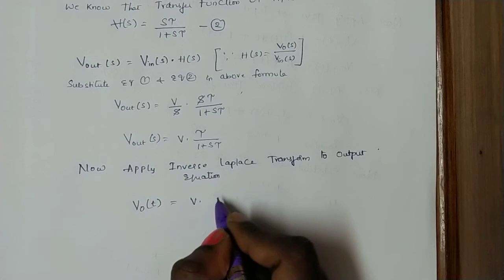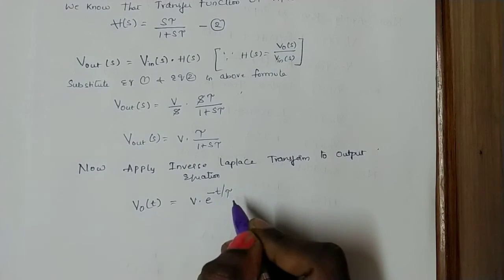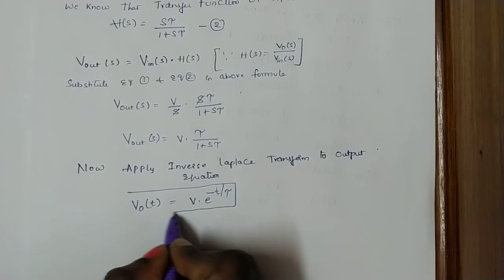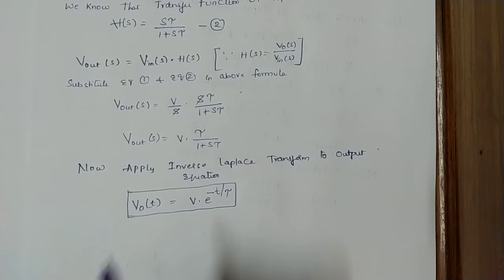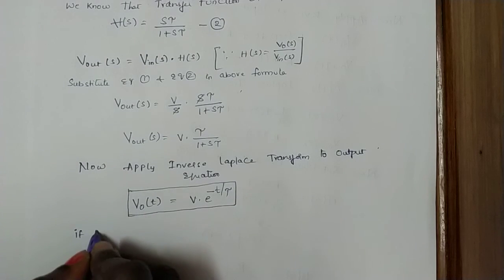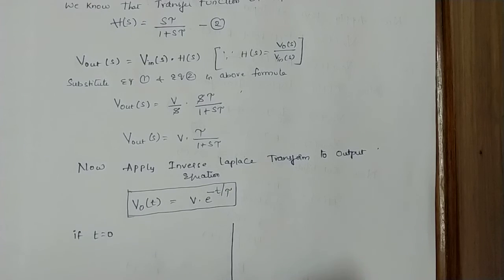This gives us the output equation of the step signal passing through an HP RC circuit. The output expression is V out of T equals V into e to the power of minus T by tau. This is the output equation for a step signal when it passes through the HP RC circuit. Now we will see how it is represented graphically.